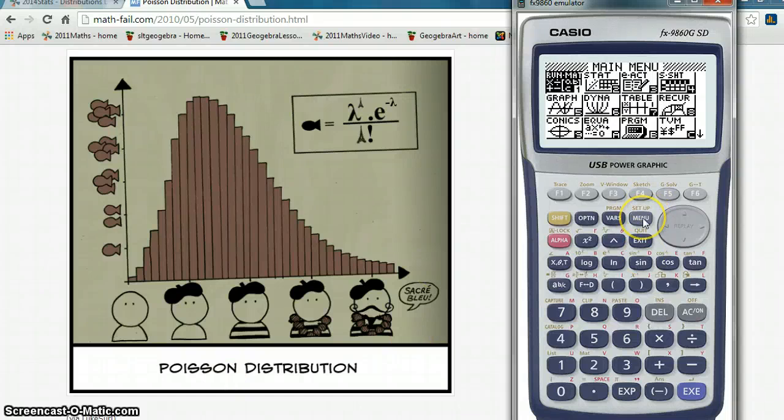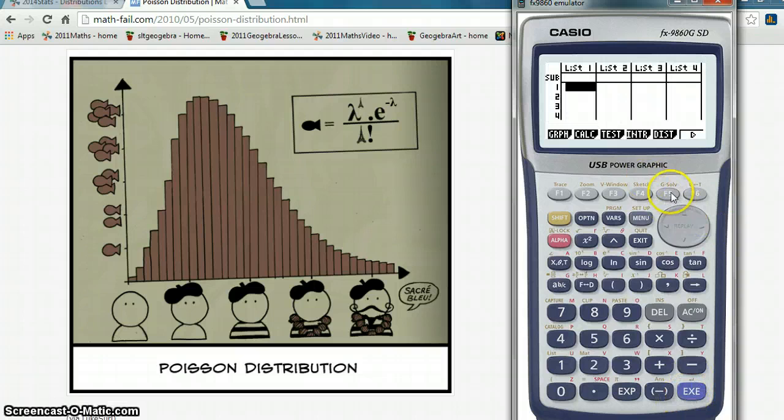So, we go menu, we go to stats, we go to distribution, and I can't see Poisson there, so I go for this extra little arrow, and there's our little Poisson.